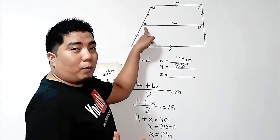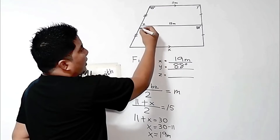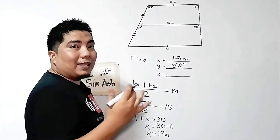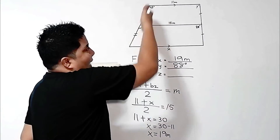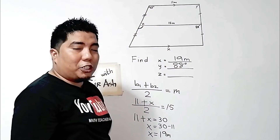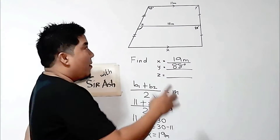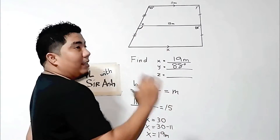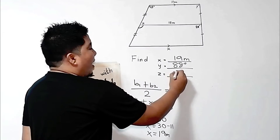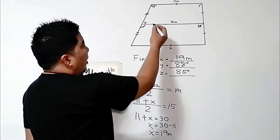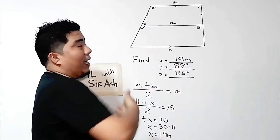Now let us go to our last variable, which is z. Since here we have z, and if this is 95, basically this is also 95. But that is not our z — it is the angle above it. But because it is a straight angle, the total measurement of a straight angle is 180 degrees. So if this is 95 degrees, then what is needed by 95 to become 180 degrees is 85 degrees. Adding 85 and 95 gives you 180 degrees, which is this line.